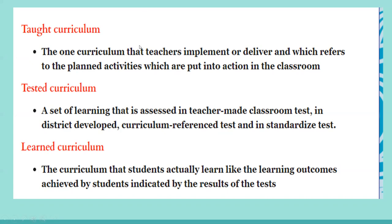The sixth type is the Learned Curriculum. This type of curriculum indicates what the students have actually learned, and it can be measured through learning outcomes. A learning outcome can be manifested by what students can perform or do in their cognitive, affective, or psychomotor domains. The learning outcome can be determined by the results of the test, and it can be achieved by students through the use of learning objectives.